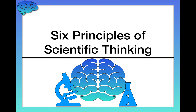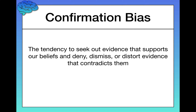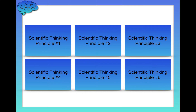In this video, I'm going to introduce six principles of scientific thinking that will guide our learning throughout this video series. I'm going to start motivating this by introducing the confirmation bias — a tendency we as humans have to seek out evidence that supports our beliefs while denying, dismissing, or distorting evidence that contradicts them. Biases like these make it really hard for us to rely on intuition and common sense to understand the world around us. These six principles are designed to minimize the effects of those sorts of biases.